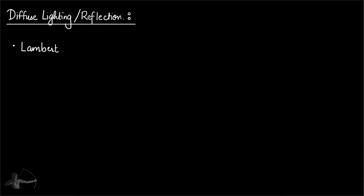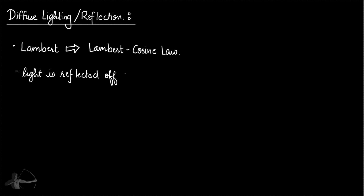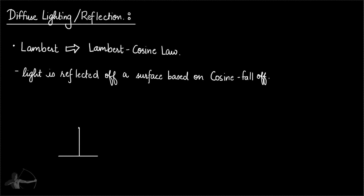So scientist Lambert defined a law called Lambert's cosine law. According to Lambert's cosine law, light is reflected off a surface based on the cosine falloff. So let's understand what cosine falloff means. If this is the surface and this is the normal, when the light hits the surface it is reflected based on the cosine falloff — visually it will look something like this.